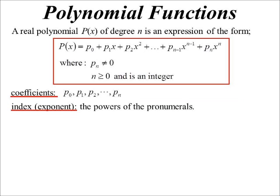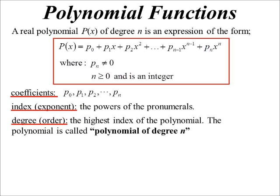So index, exponent, power, all means the same things. They're just different words we use for the power. Index, exponent. Hence why we have the curve, the exponential, because the pronumeral's in the power. Another name for power. Exponent.